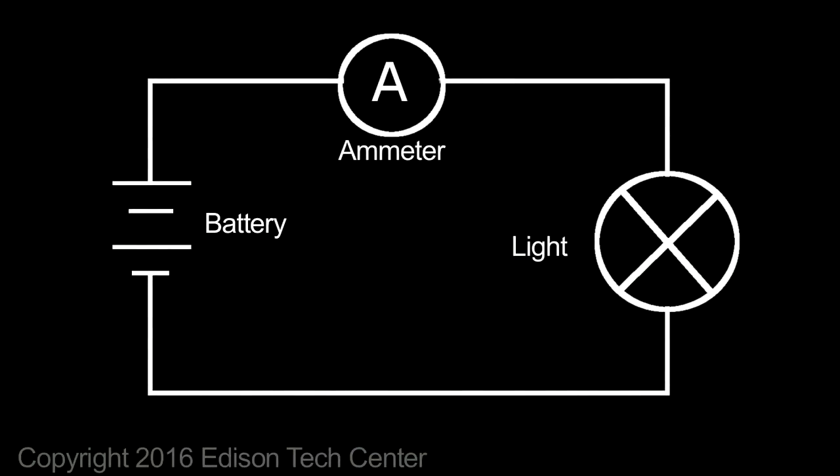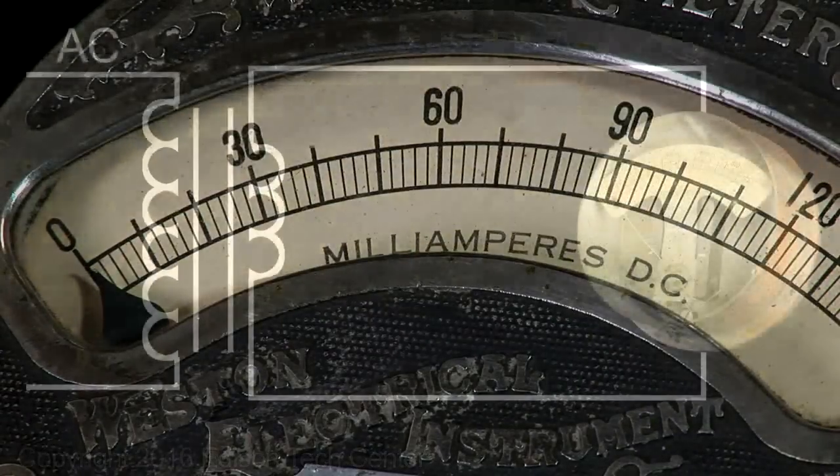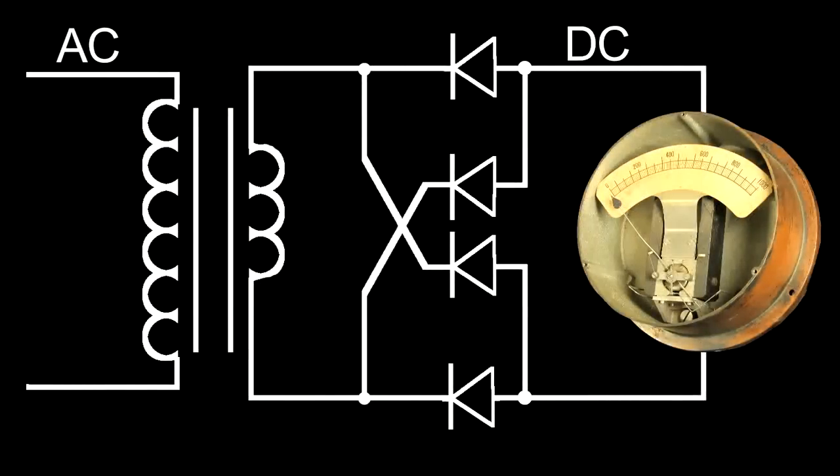While magnet based meters worked well on direct current, we need the meters to work for alternating current, so rectifiers are used to convert the signal to a constant positive current.